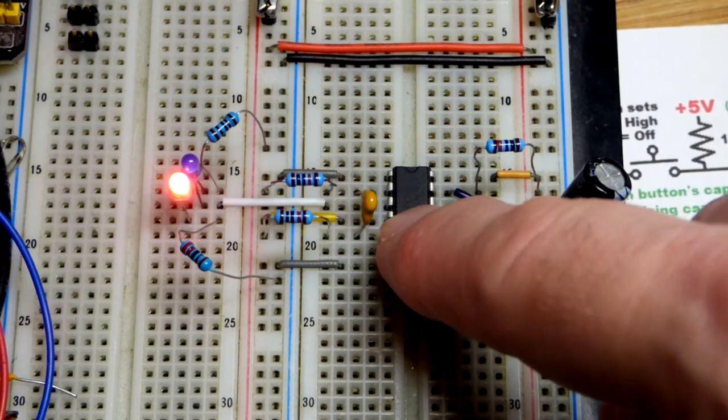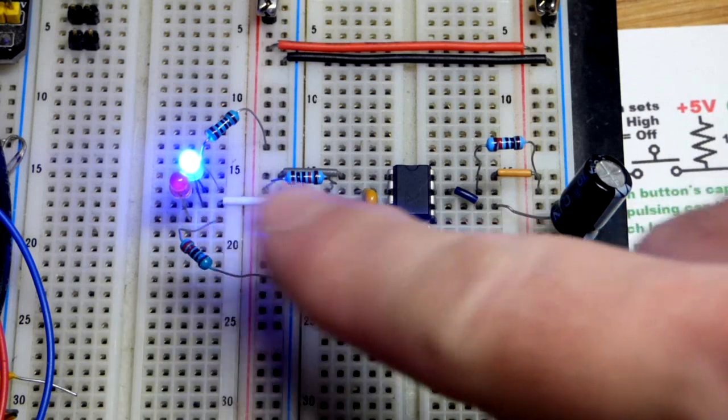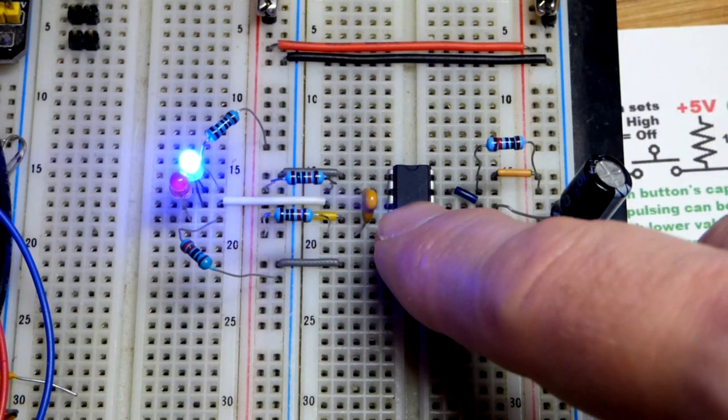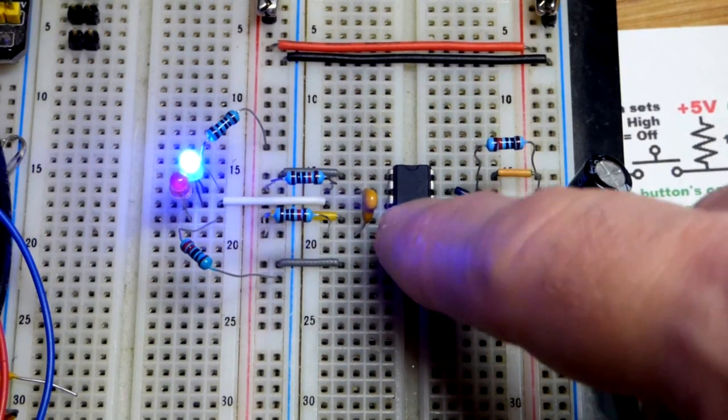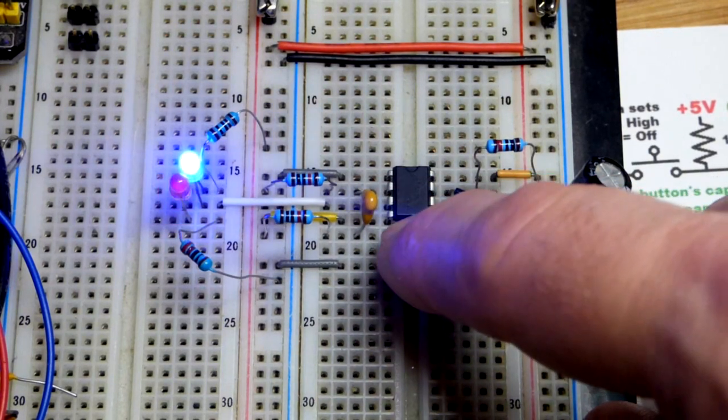So we charge the capacitor a lot faster than what the output time is. That's the main thing. And then once it's charged, we get a high voltage at pin 2 again, even if I hold the button.